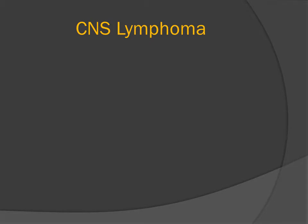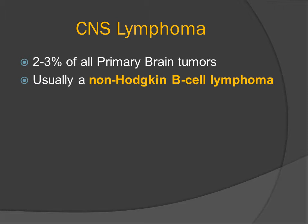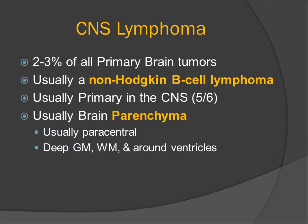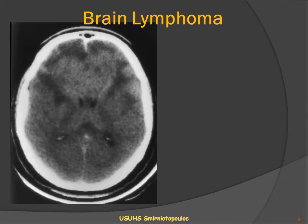Let's talk a little bit more about CNS lymphoma. CNS lymphoma represents 2-3% of all primary brain tumors. It is usually a non-Hodgkin's B-cell lymphoma, usually primary within the central nervous system without any extra-CNS locations. It's usually within the brain parenchyma in a paracentral deep location involving both the gray matter and the white matter, and it may spread around the ventricles. In contrast, secondary CNS lymphoma is usually extra-axial, involving the dura and/or the leptomeninges.